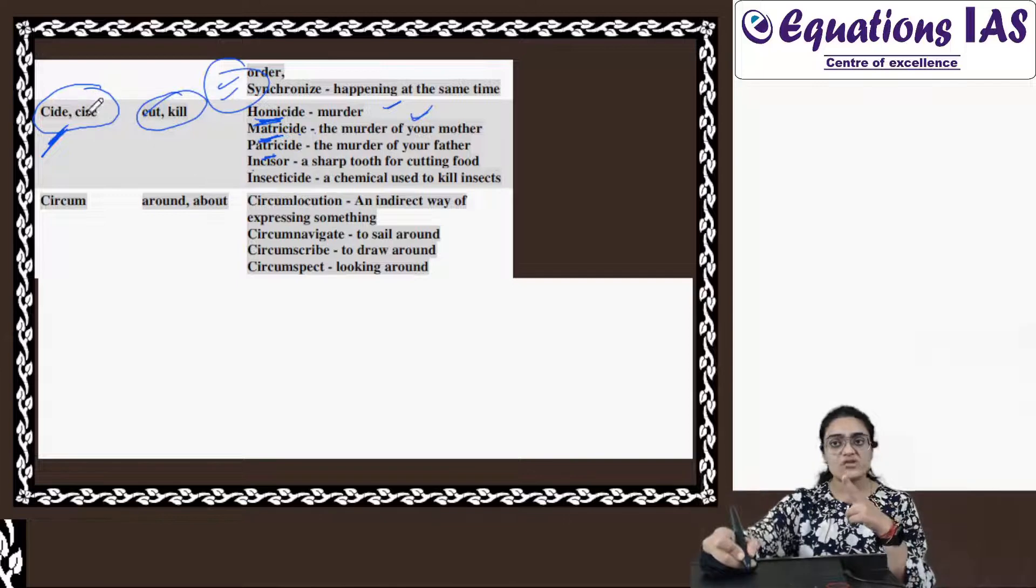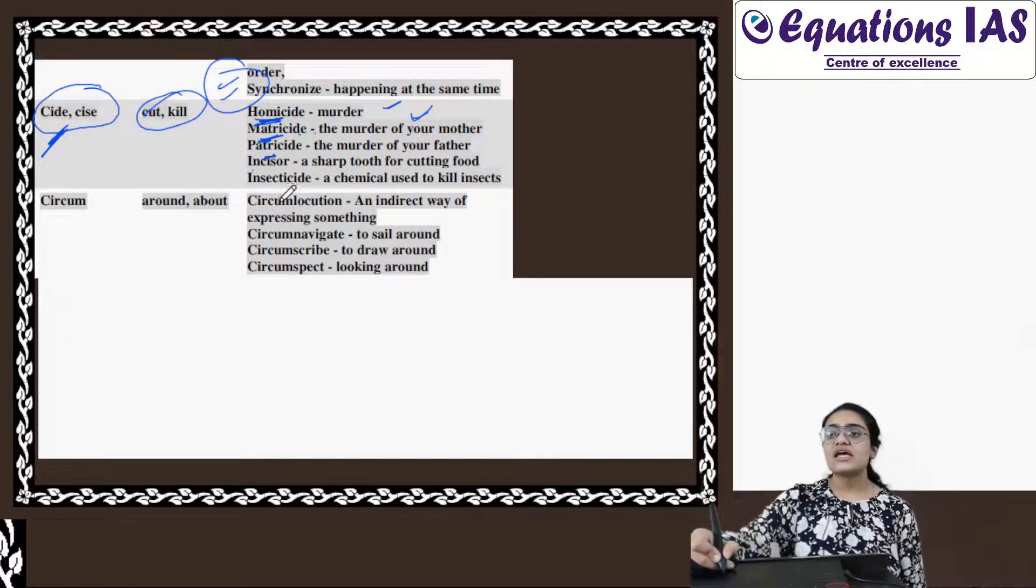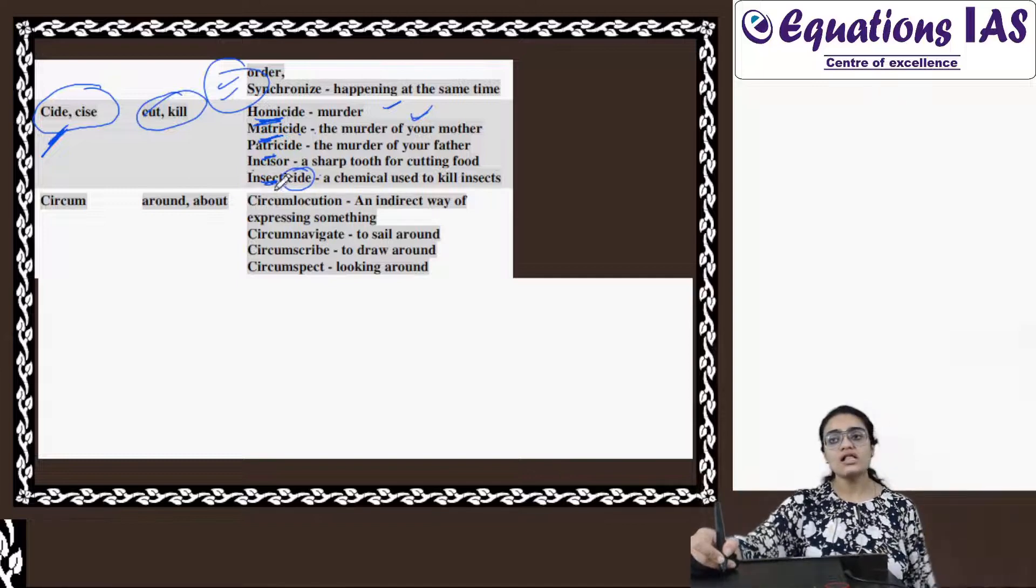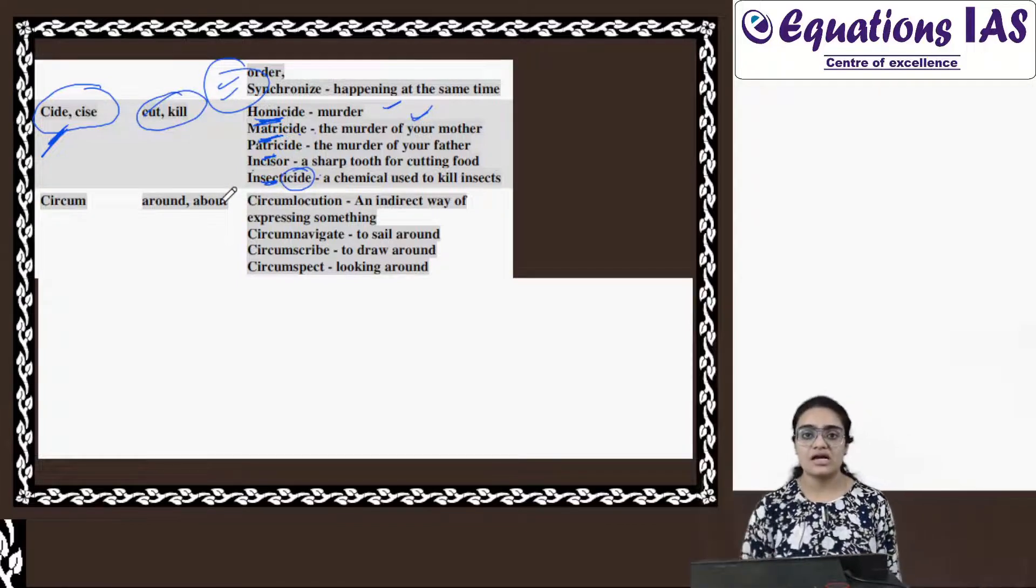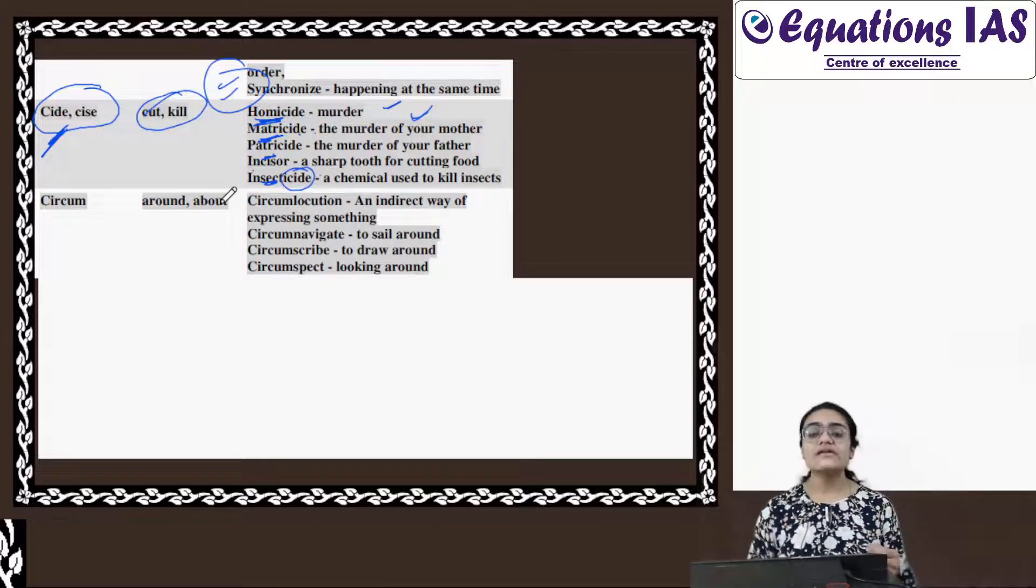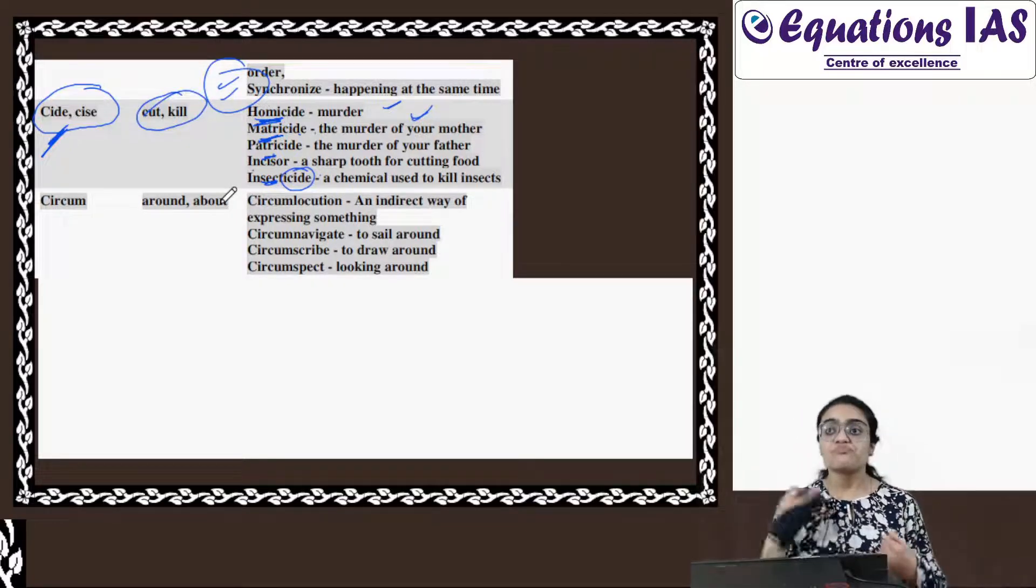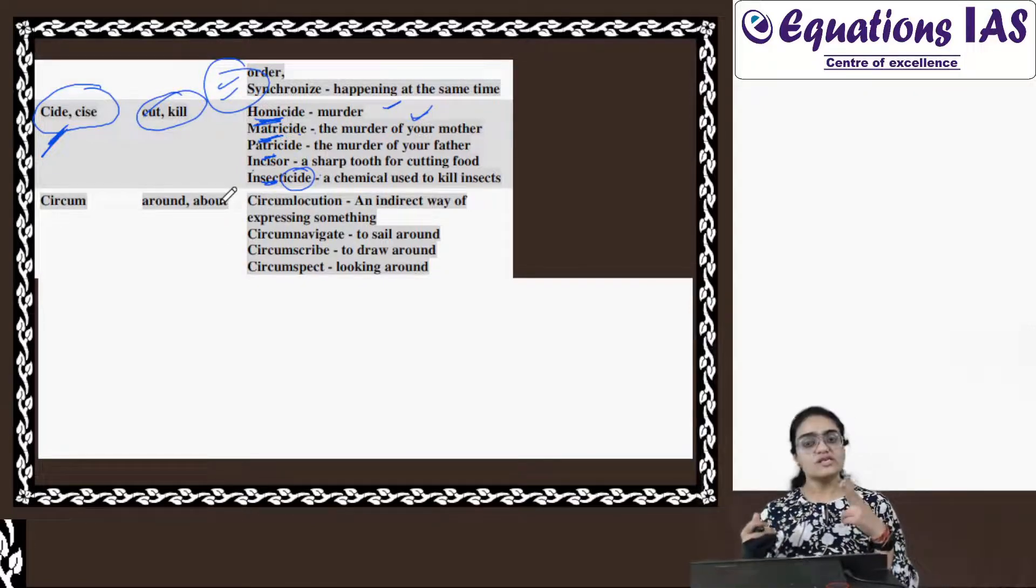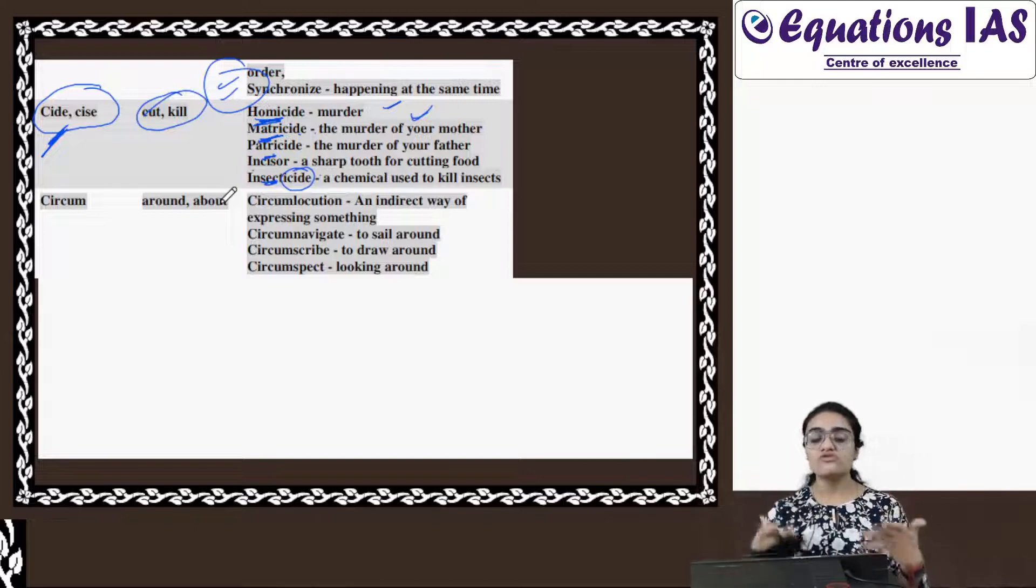Incise, scissor. So they also cut. Incise, incisor teeth - where do you cut? Incisor teeth. Insecticide. What kind? Insect ka cide - a chemical which is used to kill insects. Pesticide - a chemical which is used to kill pests. So therefore, Cide and Cise is a suffix which is used in the context of killing something, used for cutting something, right?